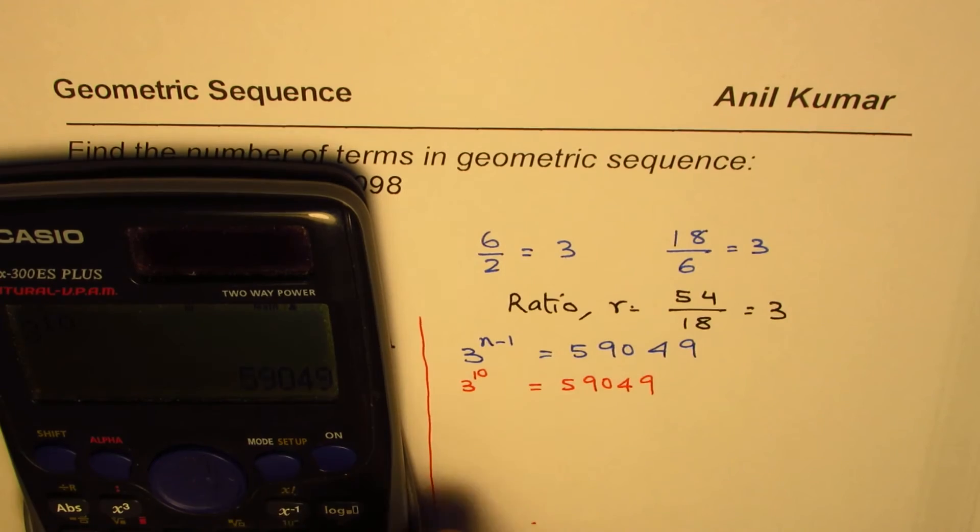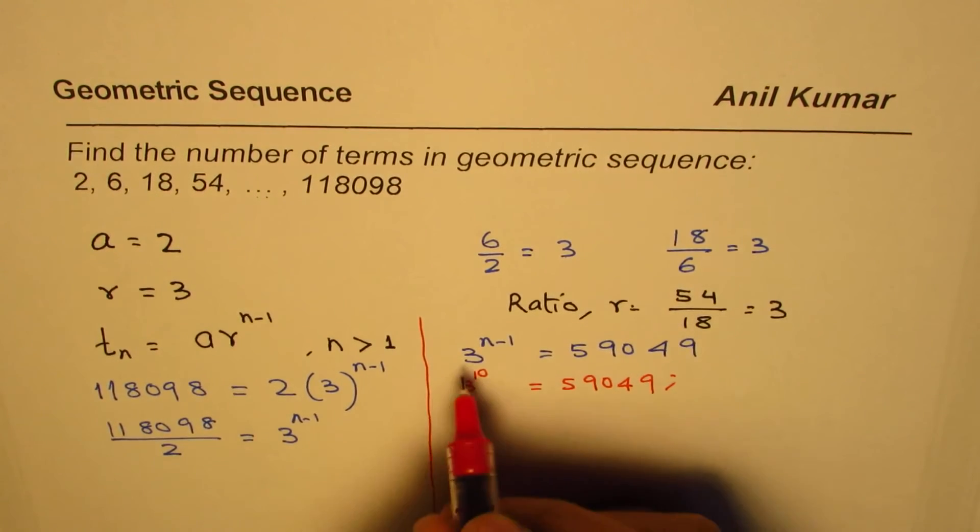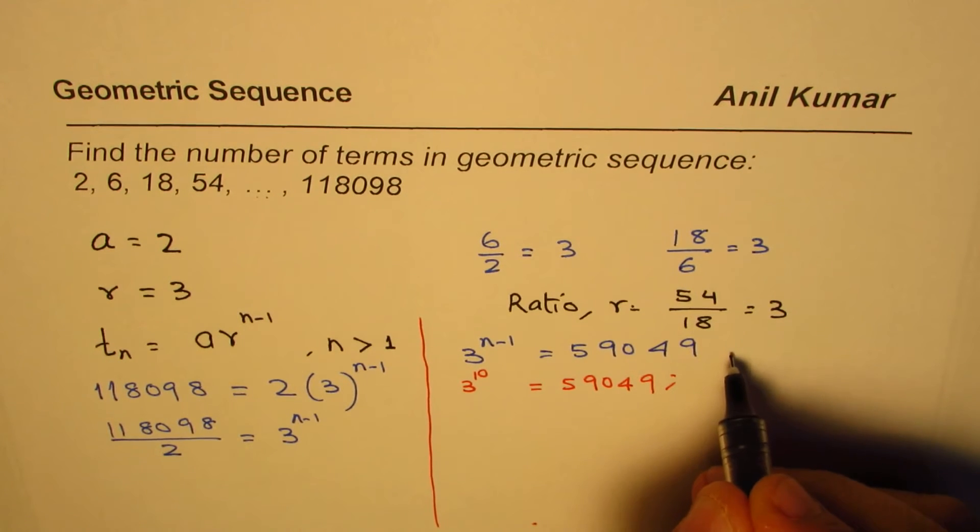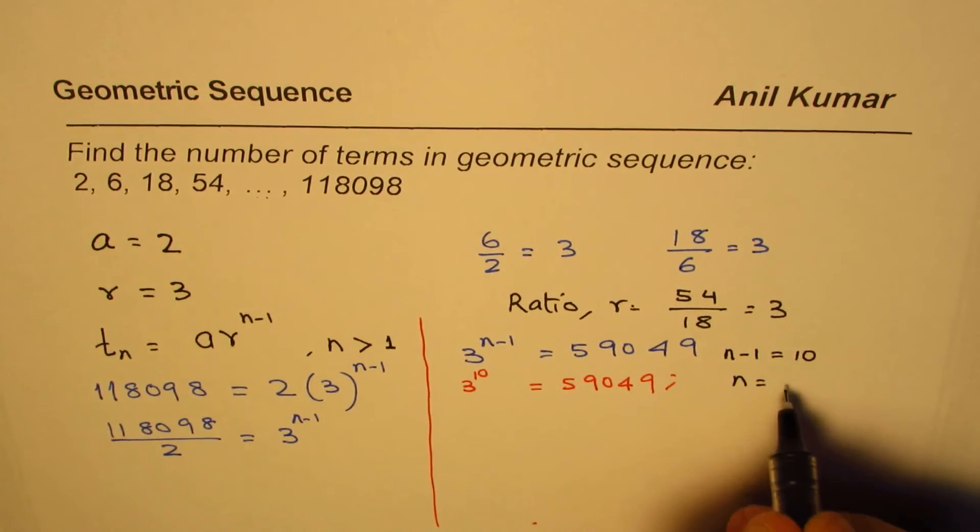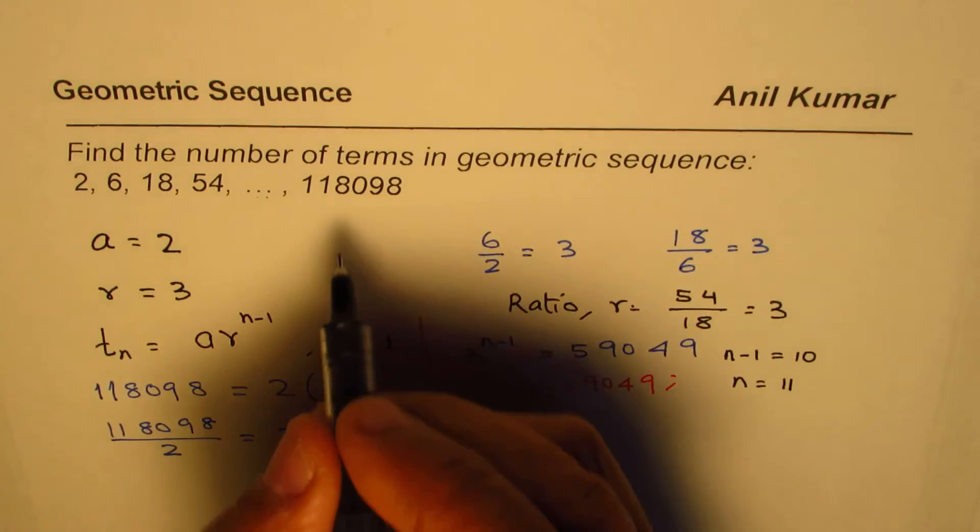Then you say well n minus 1 is equal to 10. Let me solve it here. Now we say n minus 1 equals to 10, n is 11, 10 plus 1. So you say this is 11th term.